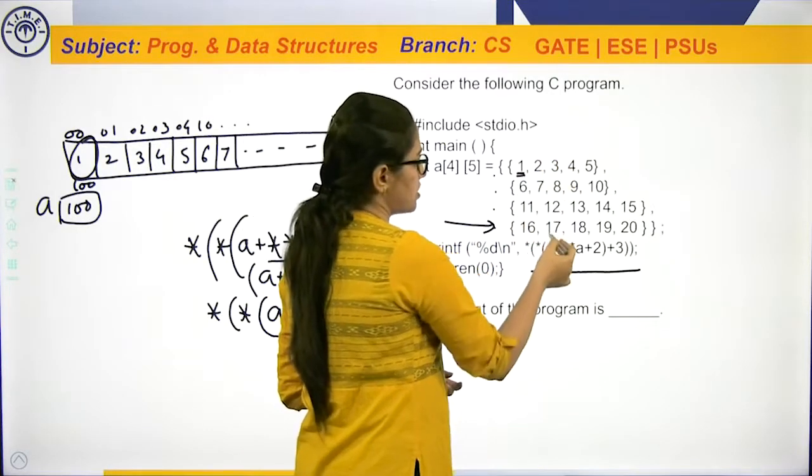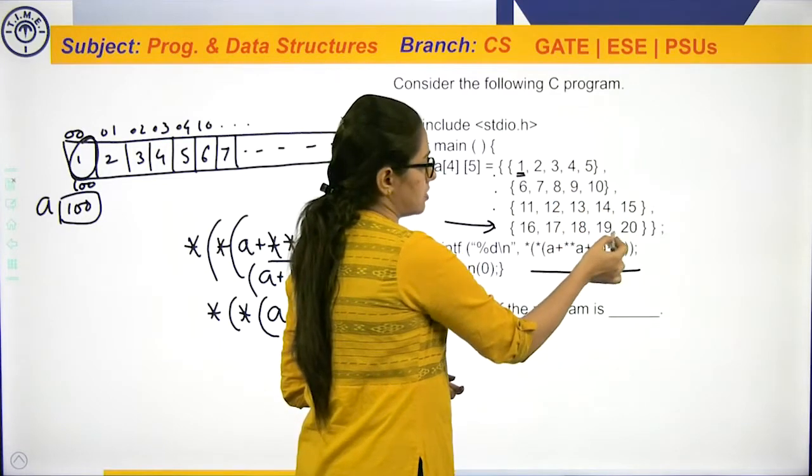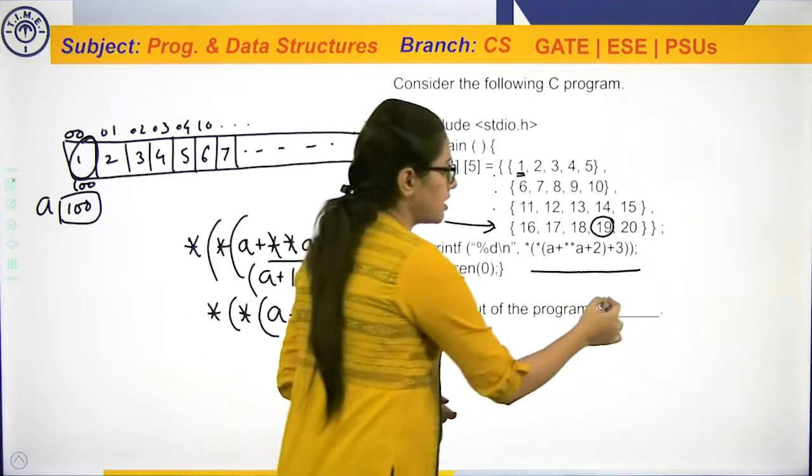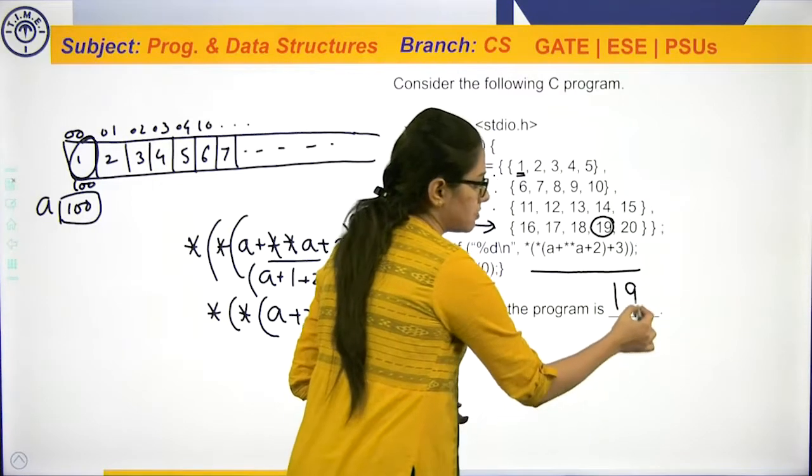Again, 0th column, 1st, 2nd and 3rd. So, this is 3rd. So, what value will get printed? Value 19 will get printed.